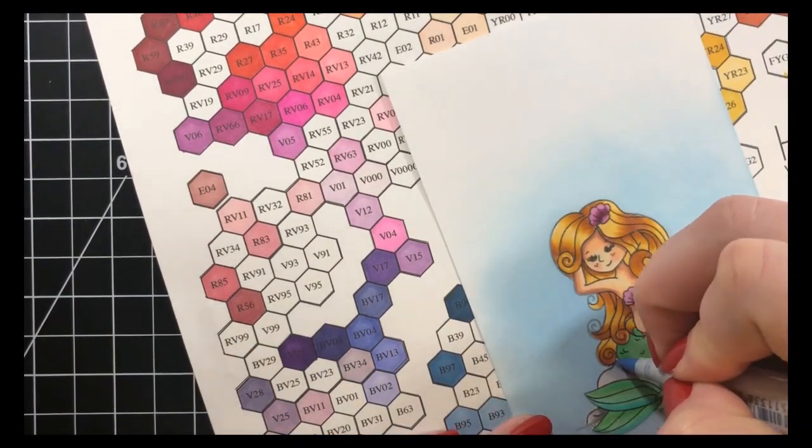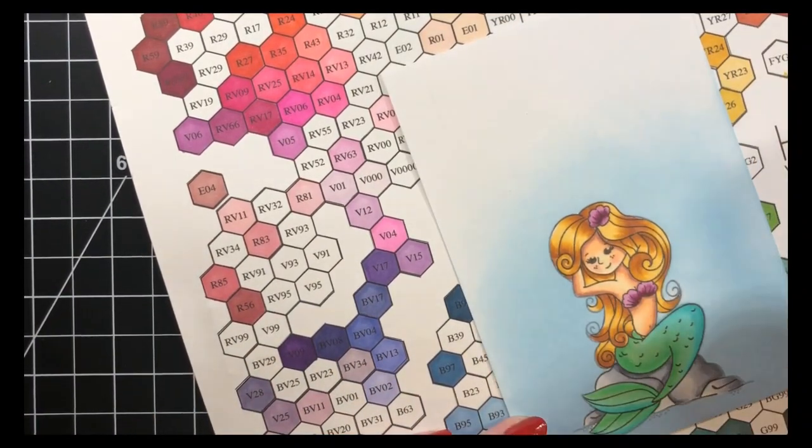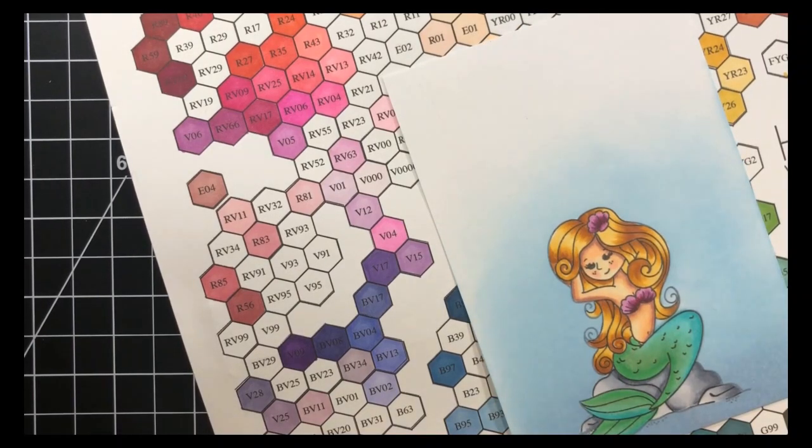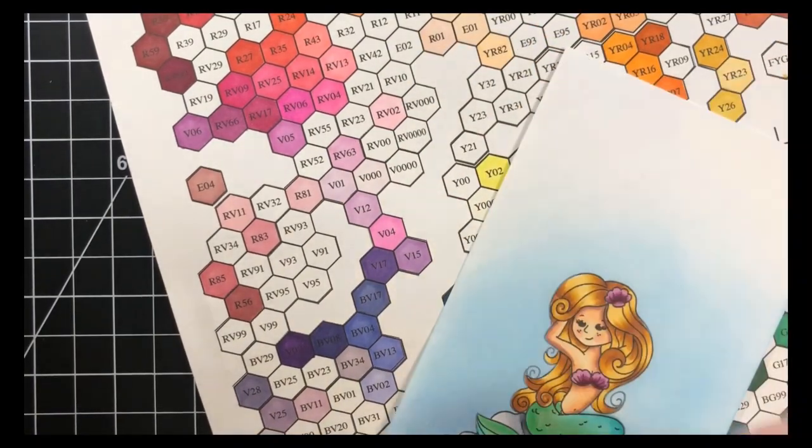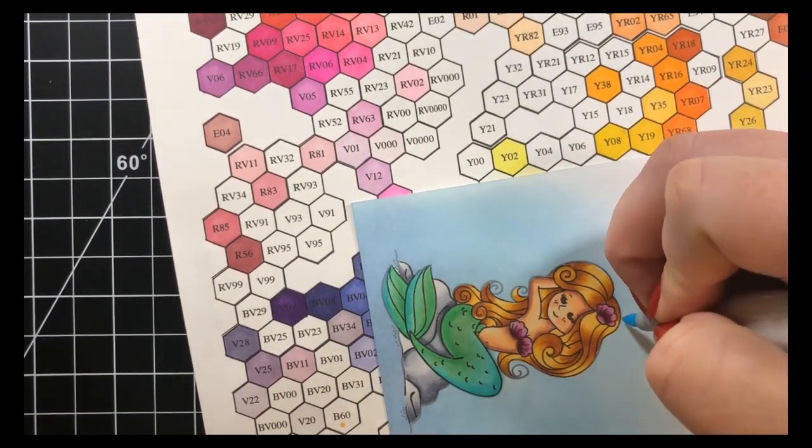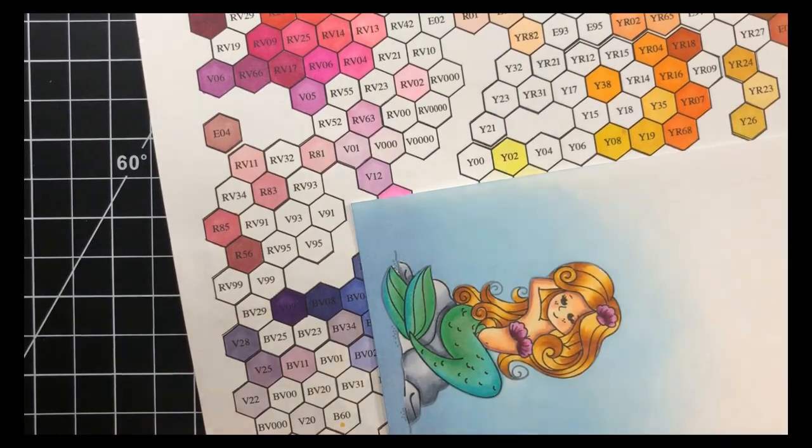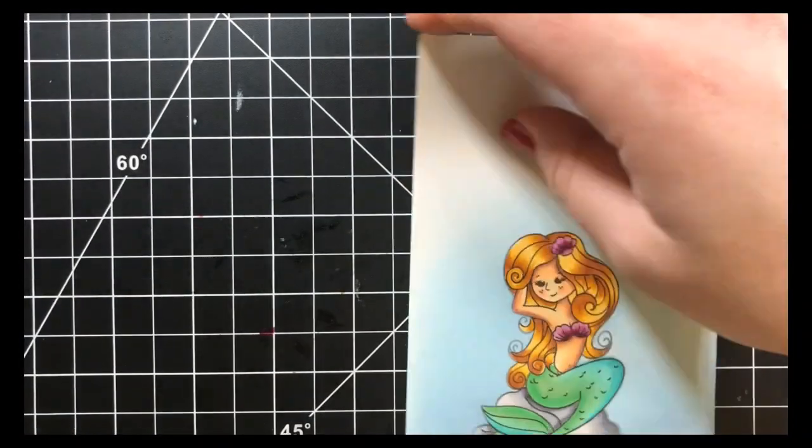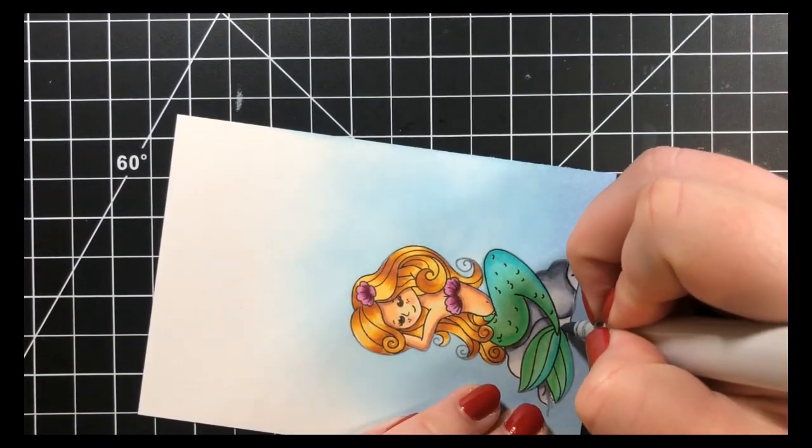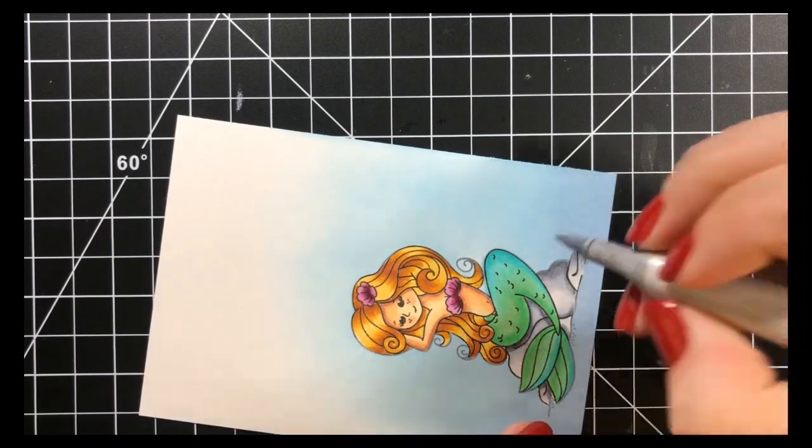Here I'm just matching up my Distress Oxides with some of the B markers that I have just to touch up some areas where I may have had a white outline around where my mask was where it just wasn't masked perfectly and I'll just touch up that little area for that rock.